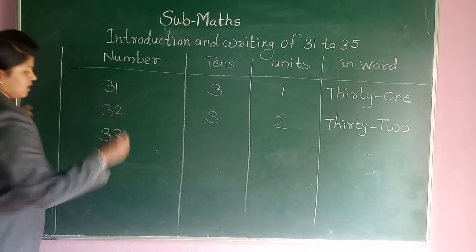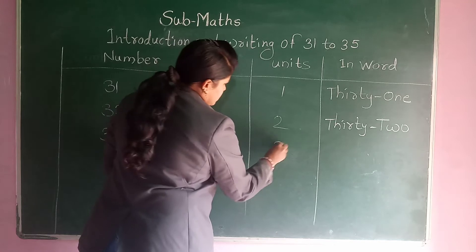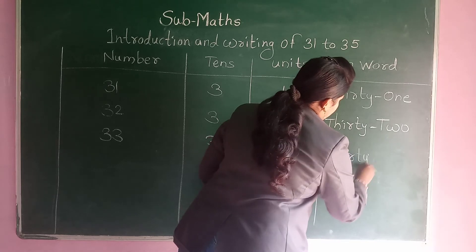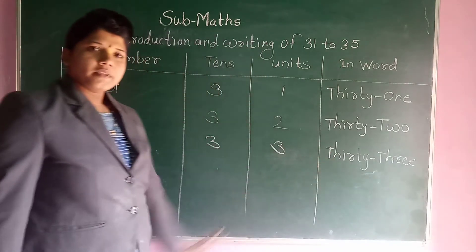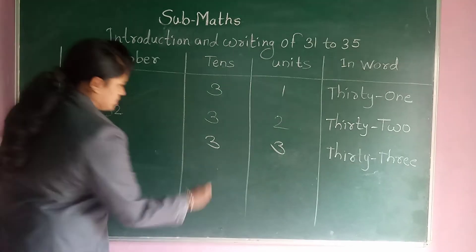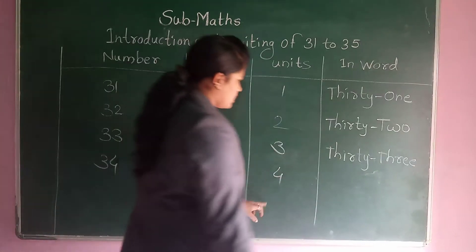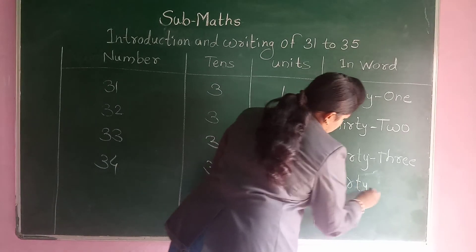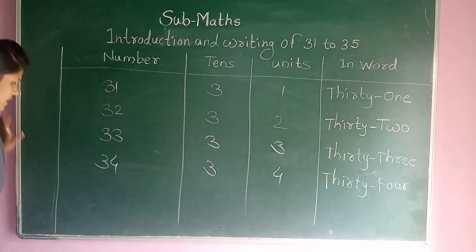Next: 33. First write tens: 3, units: 3. Next: 34. So first tens is 3 and units is 4. And how to write in word: t-h-i-r-t-y, 30 — thirty-four.